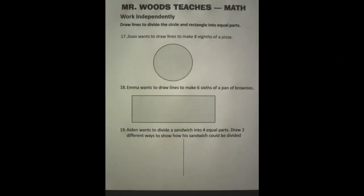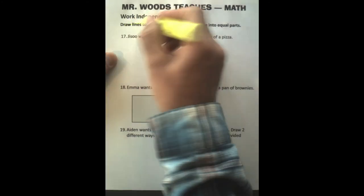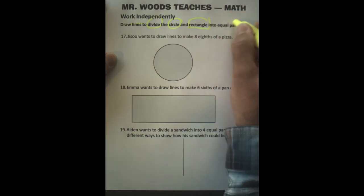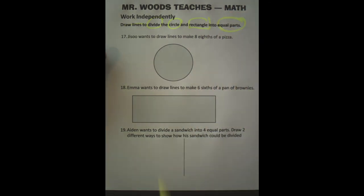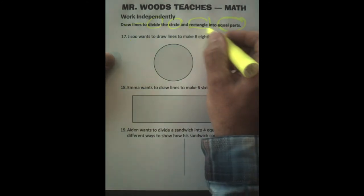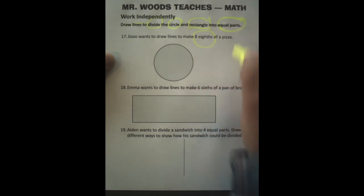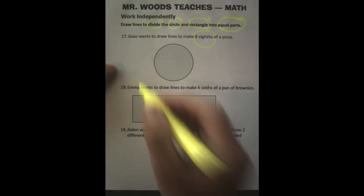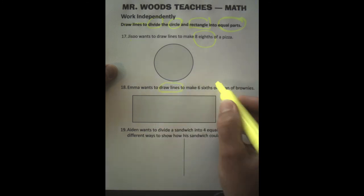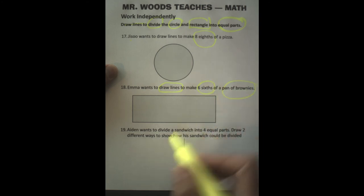This sheet is more practice. Let's take a look at the directions. It says draw lines to divide the circle and rectangle into equal parts. When we read this, it says Jisoo wants to draw lines to make eight eighths of a pizza. Emma wants to draw lines again, to make six sixths of a pan of brownies. So you need to do that here.